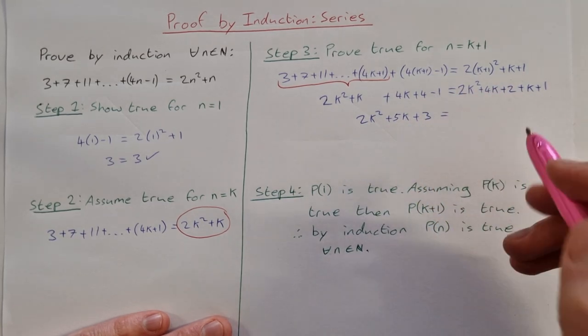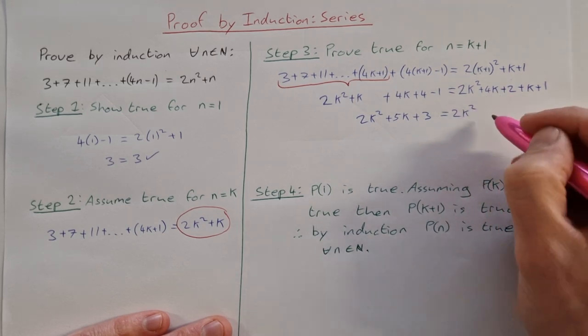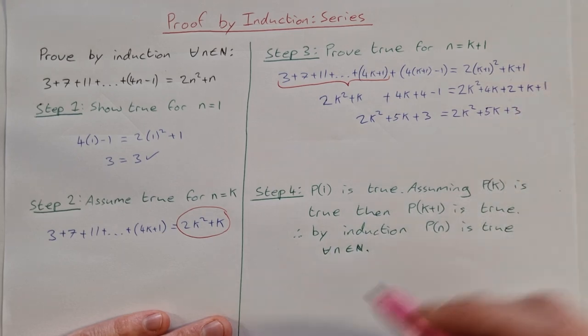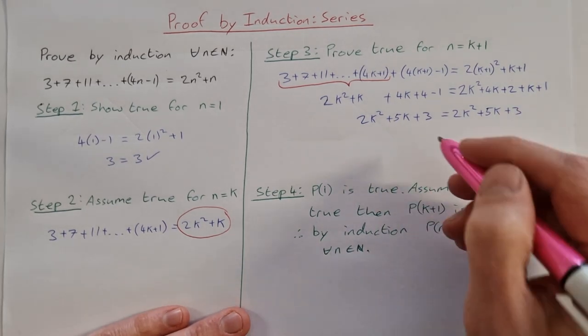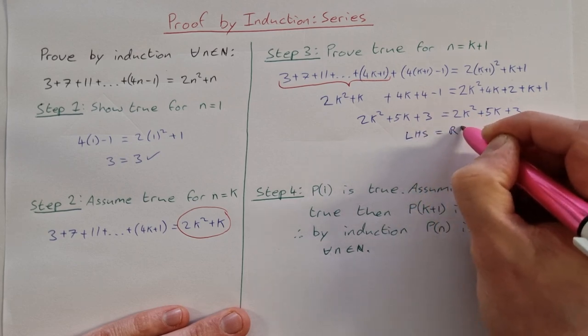On the right hand side I have 2k squared, I have 4k plus k is 5k, and I have 2 plus 1 is 3. So we can see that the left hand side is equal to the right hand side.